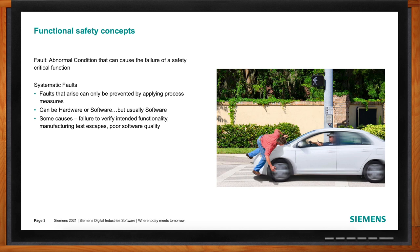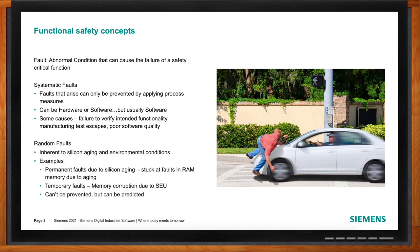Systemic faults are, at least in theory, completely preventable. You prevent them by applying process measures — do you do sufficient testing, do you test all of those edge cases and other things that can go wrong to verify that the hardware and software will behave as you expect? Sometimes that's really hard because you can't even envision what the triggering aspect for an issue might be. So what we try to do is handle those systemic faults in a way that does not impact functional safety.